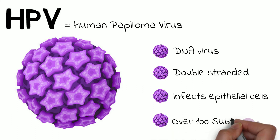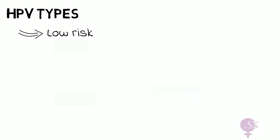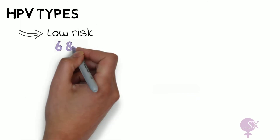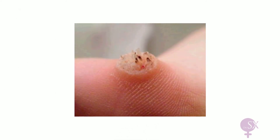There are over 100 subtypes of HPV. When we speak of HPV subtypes, we speak of the low-risk types which include HPV 6 and 11. These result in the formation of cutaneous warts, which are very common benign growths usually found on the hands and feet, with a characteristic cauliflower-like appearance.